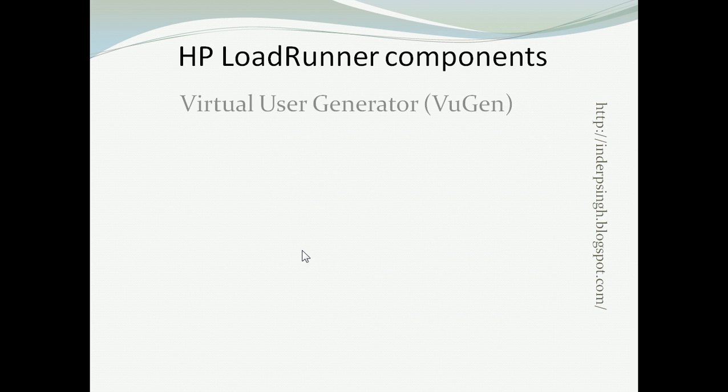First, we have the virtual user generator, also called VU Gen. Using VU Gen, we can record business processes like purchasing an item on a website, paying a bill, or booking a hotel room online.